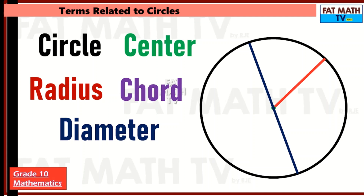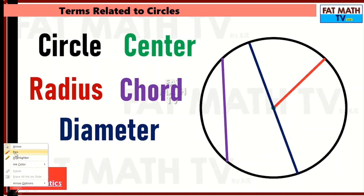Chord. A chord is a line segment connecting two points on the circle. This is an example of a chord — this is one point here, this is another point on the circle, and this is the line segment connecting the two points. The diameter is also a chord, but it is the longest chord you can make. You can also connect any two points on the circle to make another chord.